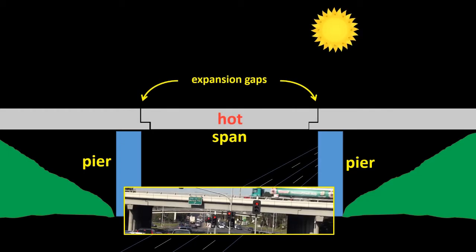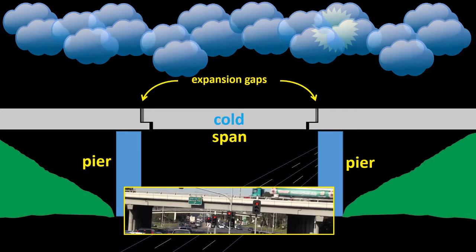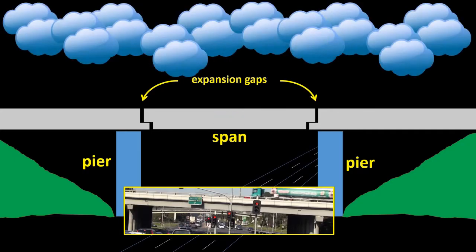When it's hot, the concrete span expands and fills the gaps, and the gaps get smaller. When it's cold, the concrete contracts, that is, it shrinks, and the expansion gaps get bigger. Here, I've been hugely exaggerating the expansion and contraction.